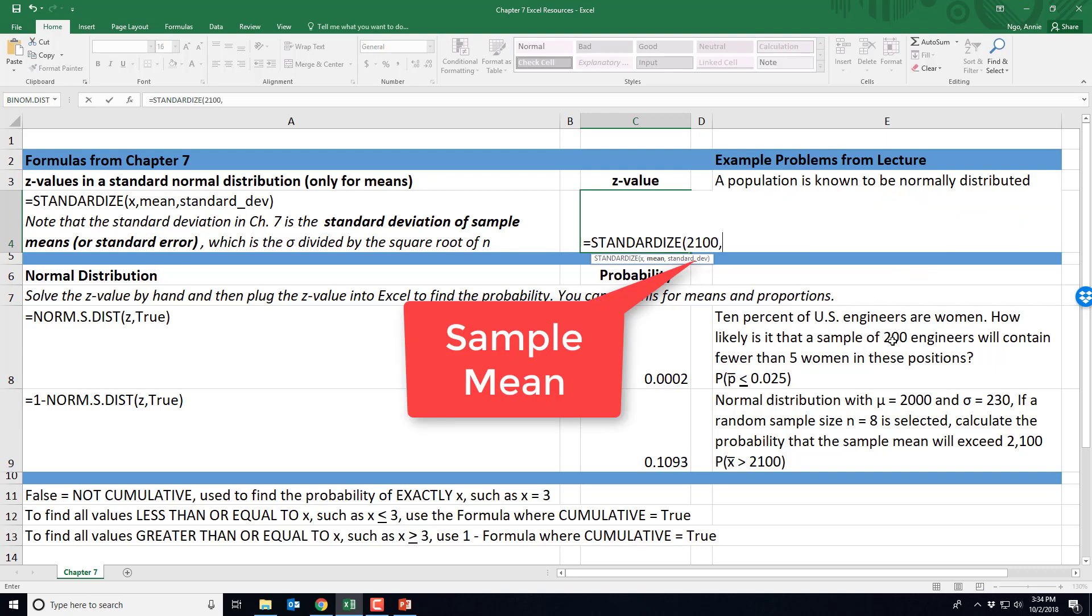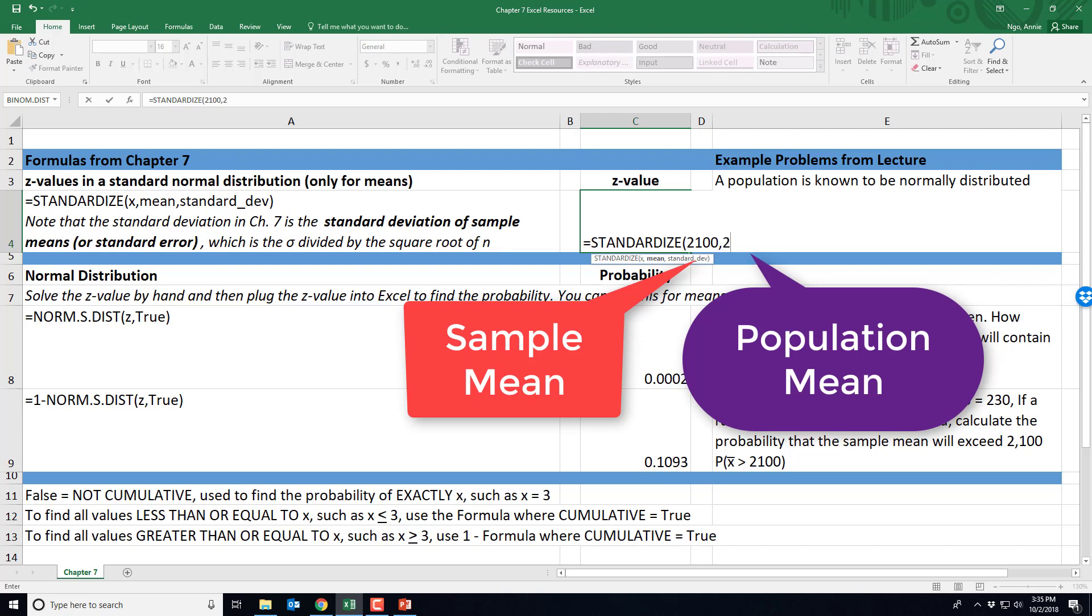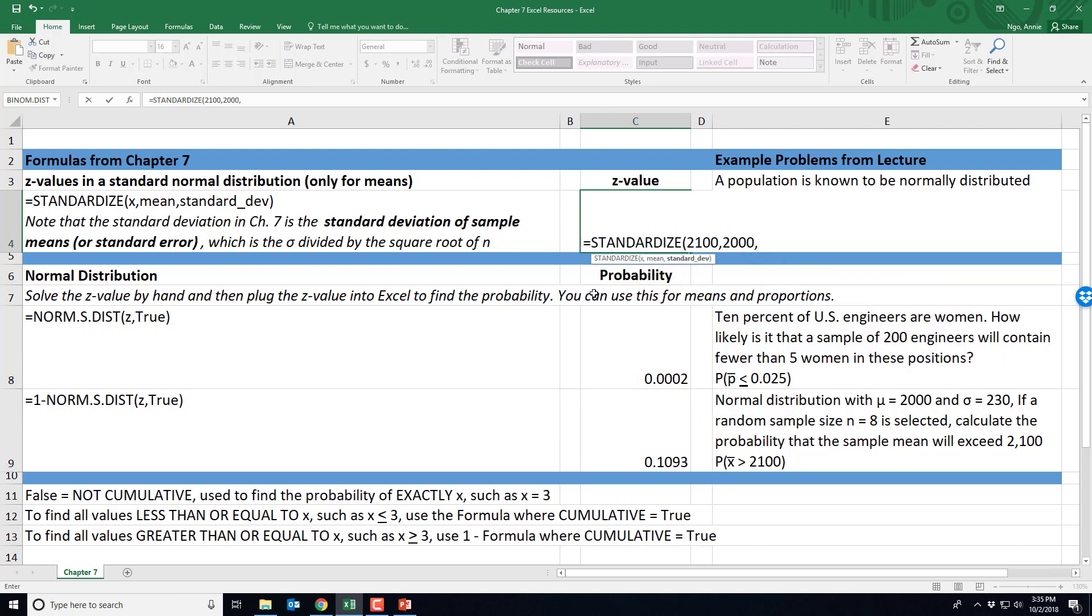Our mean was given to us at 2000, but then here our standard deviation—be careful—it's the standard deviation of our sample means, or the standard error, and we got that by taking our standard deviation in the story dividing by our square root of n.